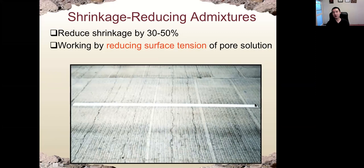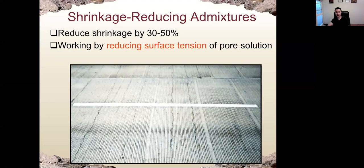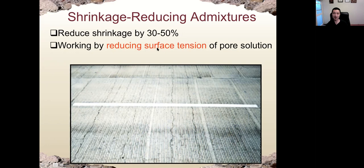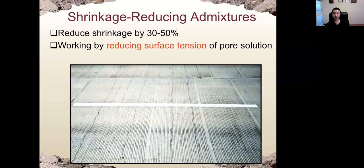Shrinkage-reducing admixtures address the fact that concrete may shrink due to different reasons — for example, drying shrinkage, chemical shrinkage, or autogenous shrinkage. We have a dedicated lecture on reasons for shrinkage of concrete and how to compensate for it. Today, just remember we have chemical admixtures that can reduce the shrinkage of concrete. Shrinkage-reducing admixtures work by reducing the surface tension of the pore solution — the water inside the concrete — so the shrinkage will be less.